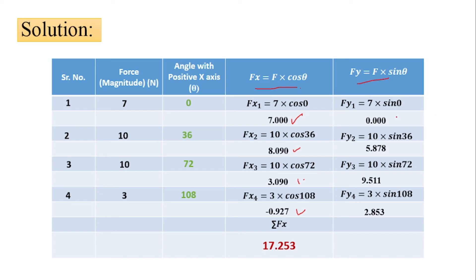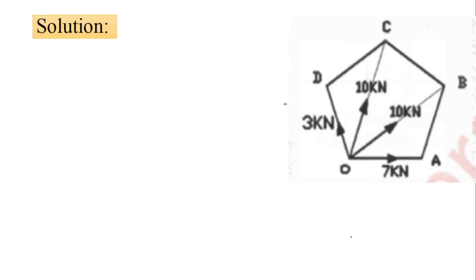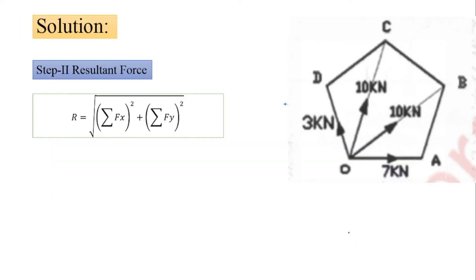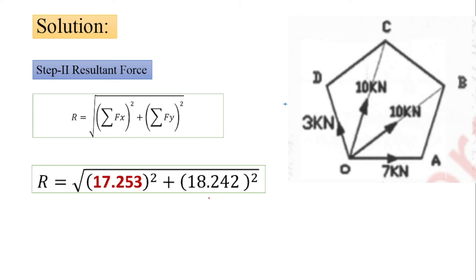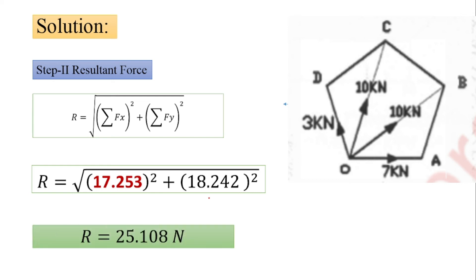Now find the summation of all values in the Fx column — this gives summation of Fx. Then find the summation of Fy for all values, which equals 18.42. This table makes it very easy to find the summation of Fx and Fy. The resultant R equals the square root of (summation of Fx squared plus summation of Fy squared), giving R equals 25.108 kilonewtons.